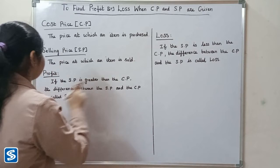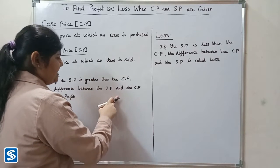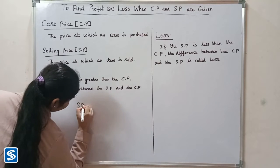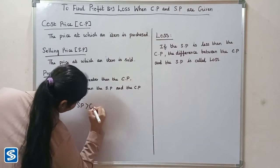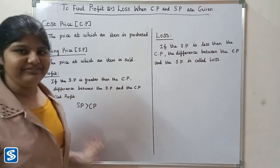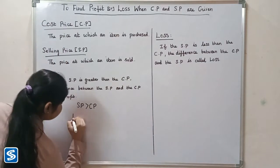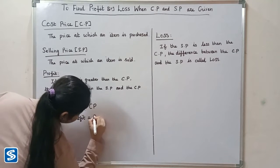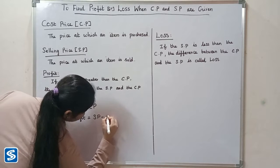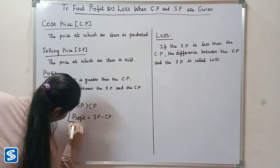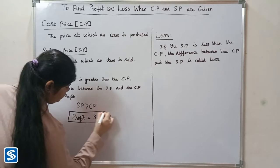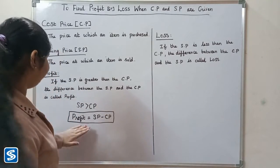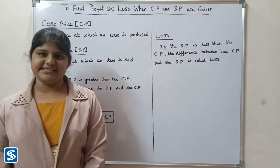Profit means if the selling price is greater than the cost price, the difference between the selling price and the cost price is called profit. That is, if selling price is greater than cost price, then we have a profit. So profit is equal to selling price minus cost price. This is the formula for finding profit.